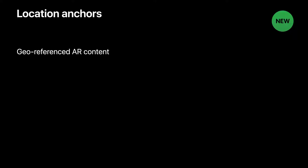Location Anchors enable you to place AR content in relation to the globe. You can place virtual objects by specifying a latitude, longitude, and altitude. ARKit will take your geographic coordinates, as well as high-resolution map data from Apple Maps, to place your AR experiences at the specific world location. This whole process is called visual localization, and it will precisely locate your device more accurately than could be done before with just GPS.